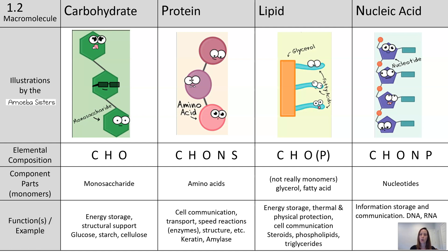It's important to know what atoms are in each of these macromolecules. In carbohydrates we have carbon, hydrogen, and oxygen. In proteins we have carbon, hydrogen, oxygen, nitrogen, and sulfur — we'll talk more about sulfur's role when we cover proteins in more detail. In lipids we always have carbon, hydrogen, and oxygen, and some lipids also include phosphorus. Nucleic acids include carbon, hydrogen, oxygen, nitrogen, and phosphorus.